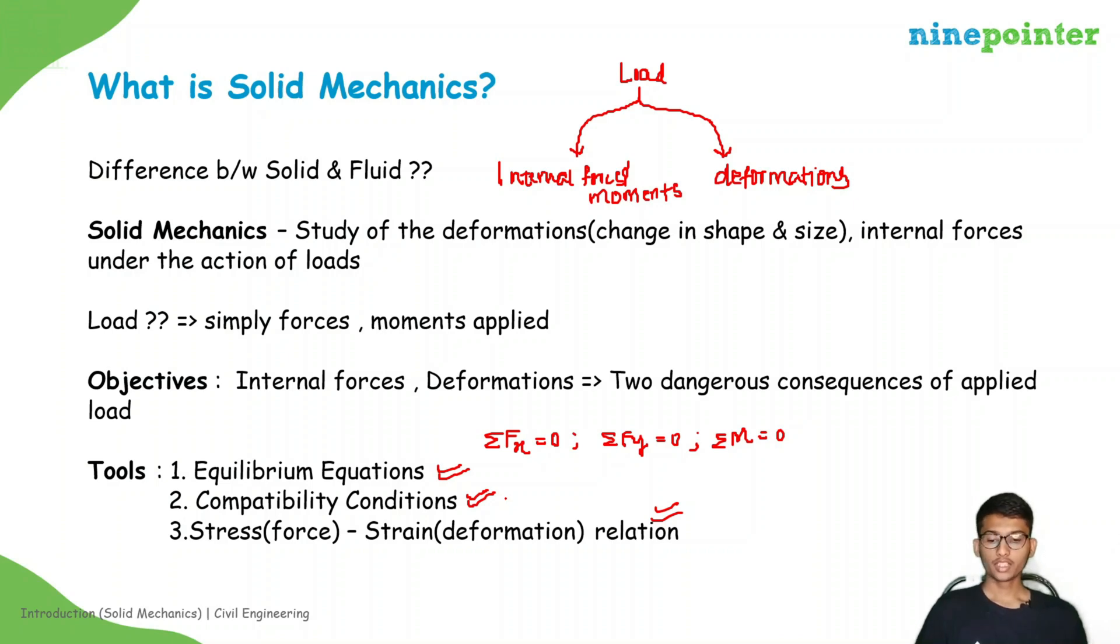We discuss compatibility conditions in future lectures. Let us have a little bit about this stress strain relation. Because of the load there are two consequences: one is internal forces or moments, and another is deformations. Can we relate these two things? Yes, we can. The relation between these two things is known as stress strain relationship. Stress is force per unit area. Strain is change in length by original length. For example, sigma equals E into epsilon is one of the stress strain relationships. Sigma is stress, epsilon is strain, E is some constant, it is a material property. We will deal about these things in future lectures.